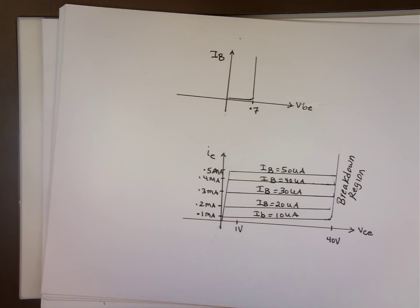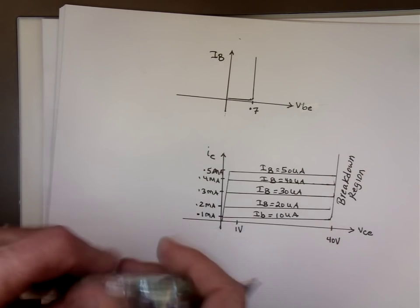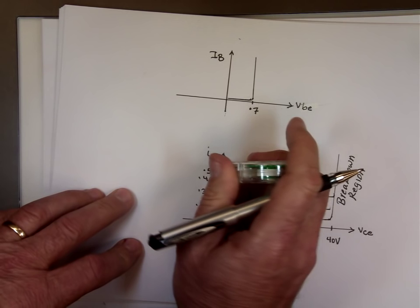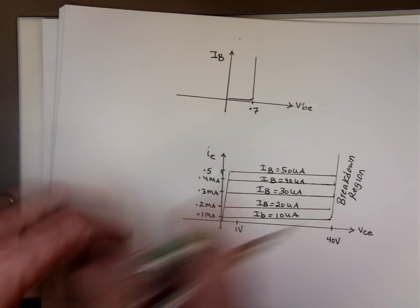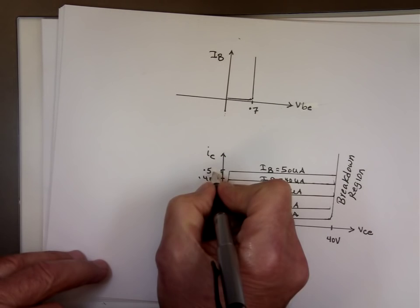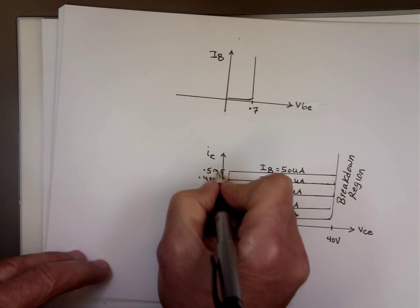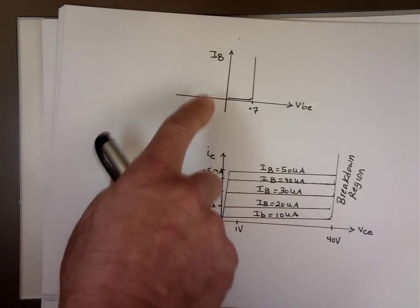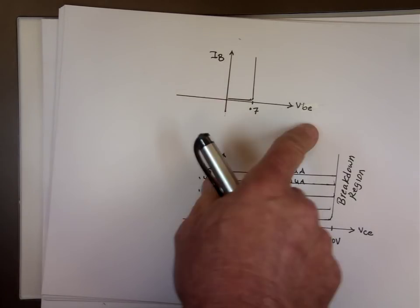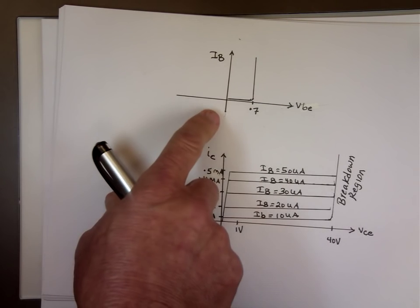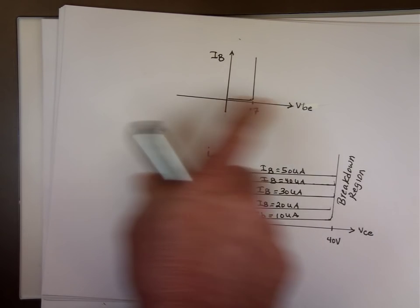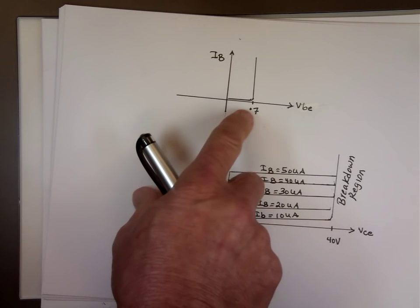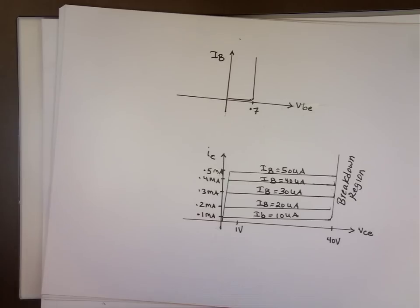From these graphs we can figure out a few things. First, when the transistor is on, if it's silicon the voltage between the base and the emitter has to be at least 0.7 volts for current to flow through it.